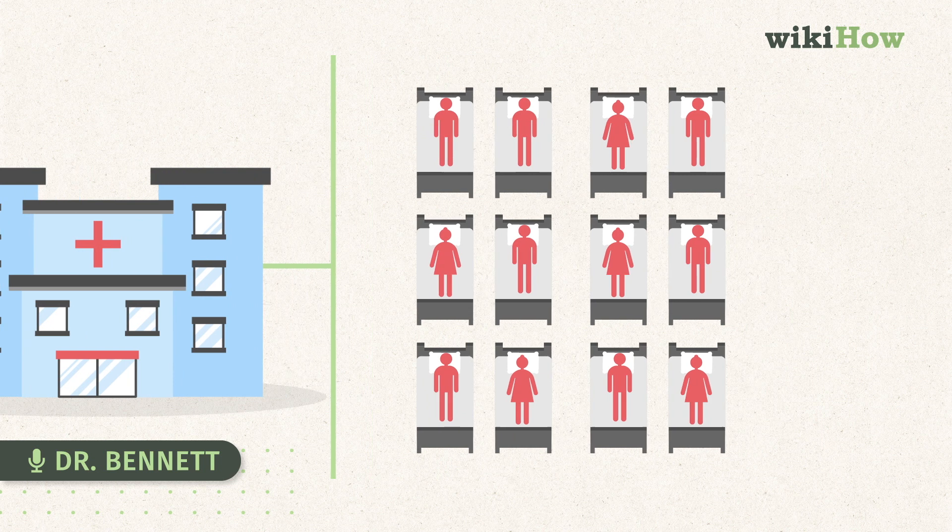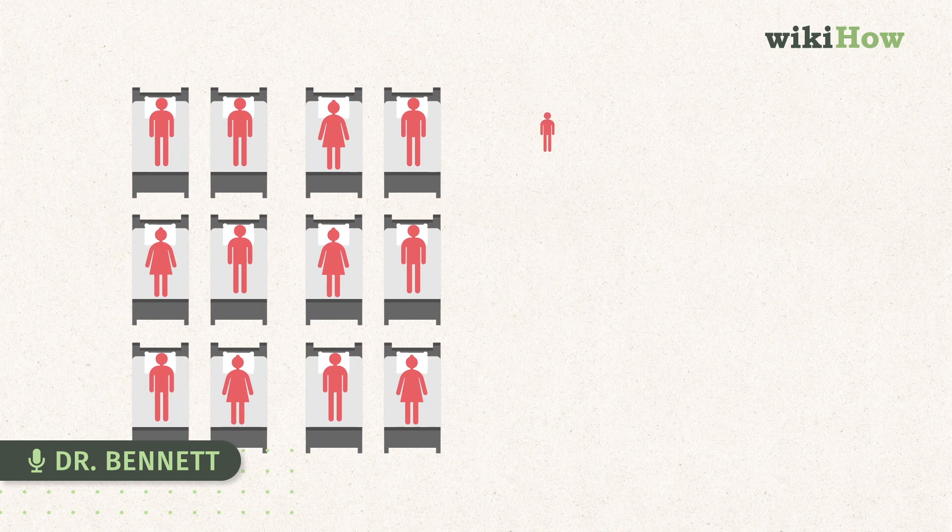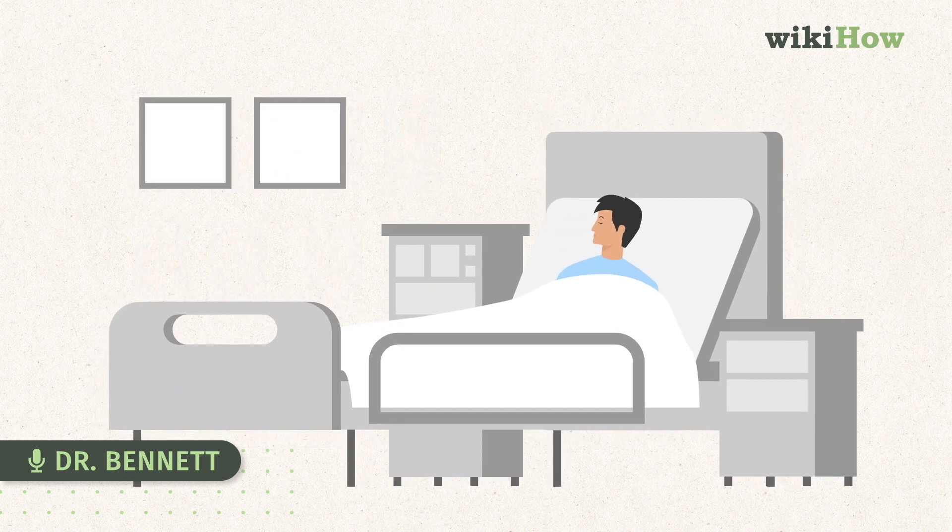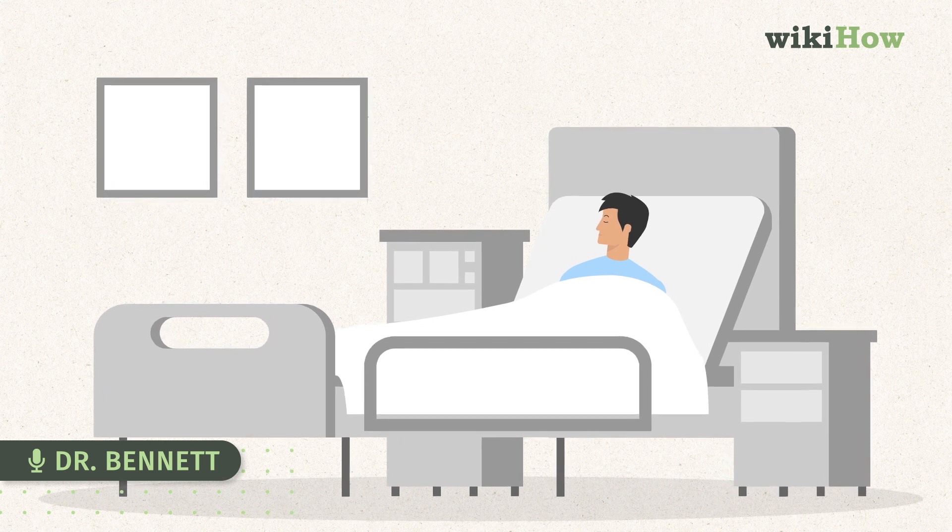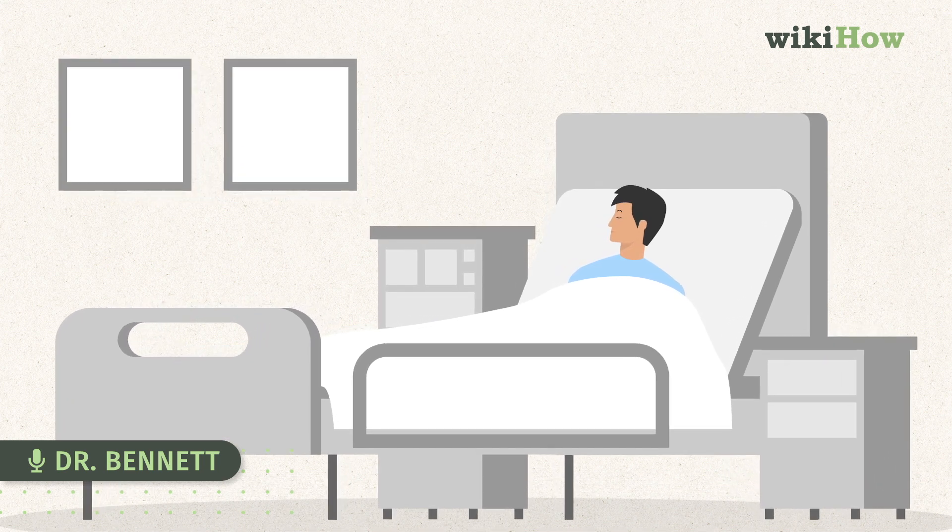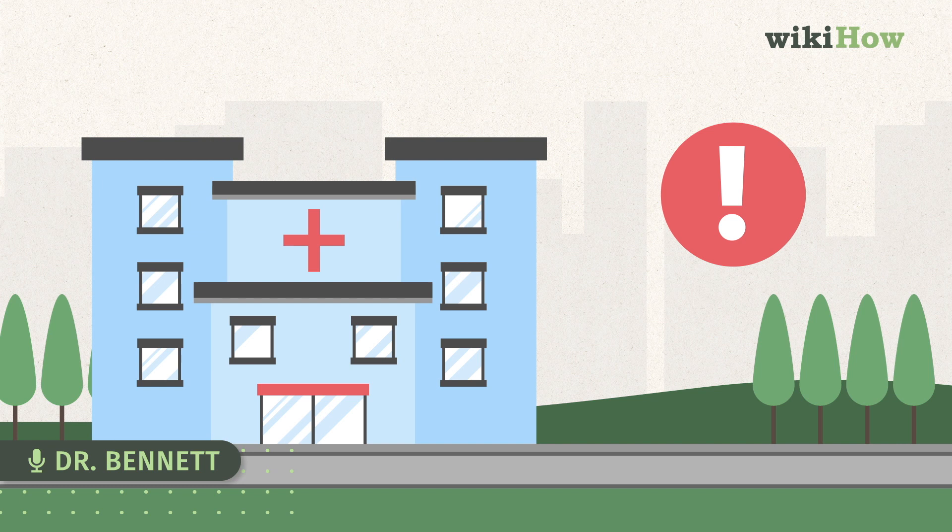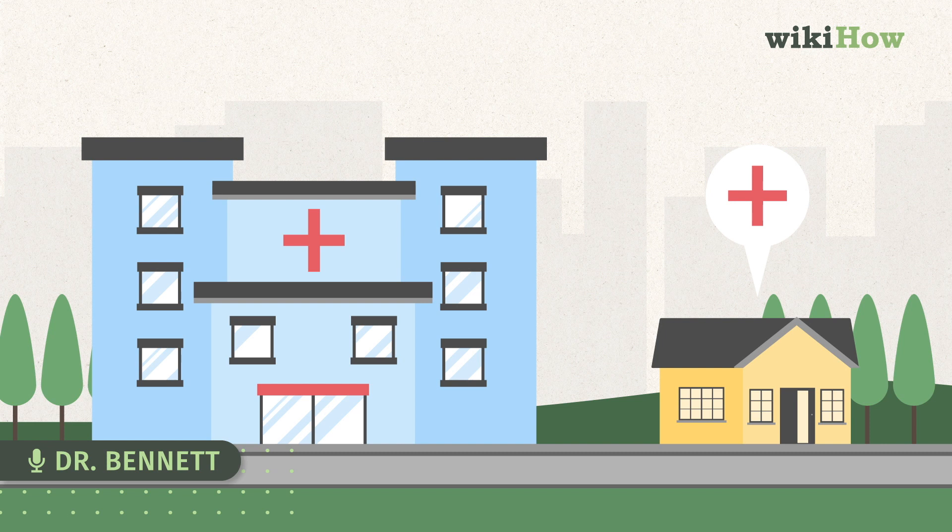And in places where we haven't been able to flatten the curve, to come in under the healthcare capacity's ability to care for people, we see this higher case fatality rate. So it's really important to protect people from dying of this virus to flatten the curve. We can do our part by not going into a hospital setting where not only are we more at risk of picking up an infection, it also reduces the pressure on the healthcare system.